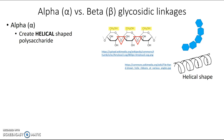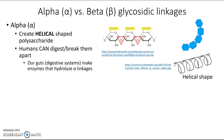Another thing to know about alpha glycosidic linkages is that humans are capable of digesting them — breaking them apart. The reason is that our digestive systems make enzymes that can hydrolyze those linkages — they can perform hydrolysis on them.